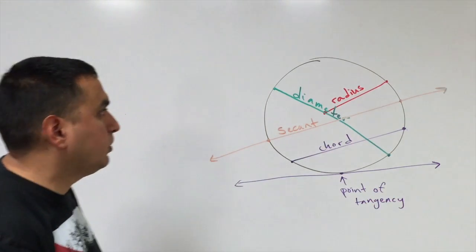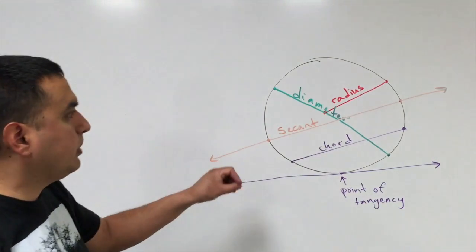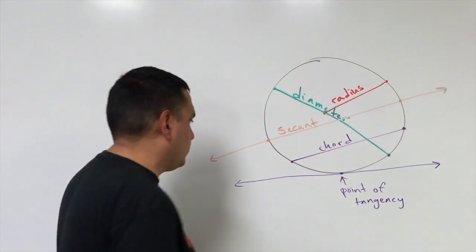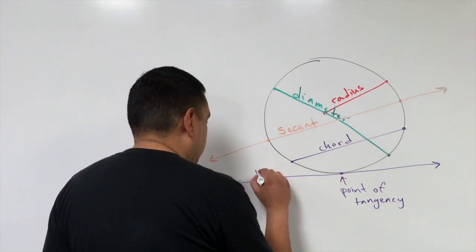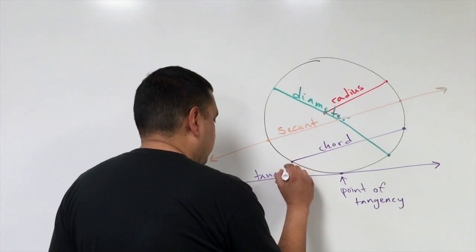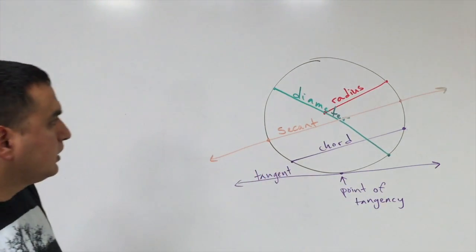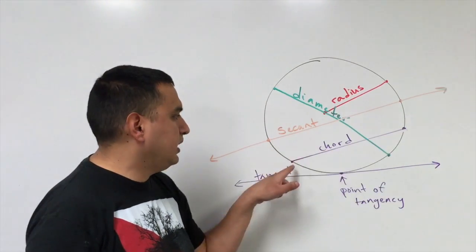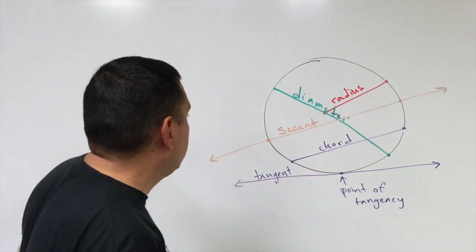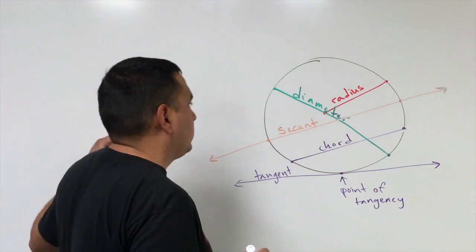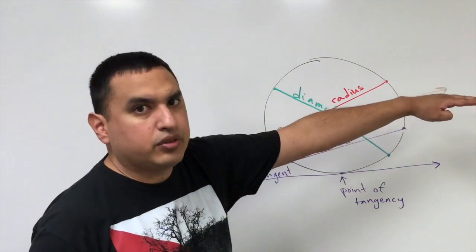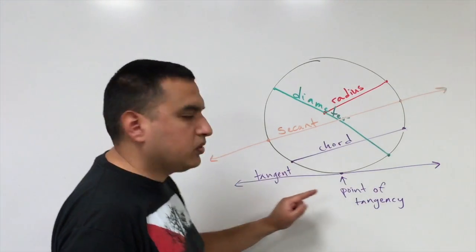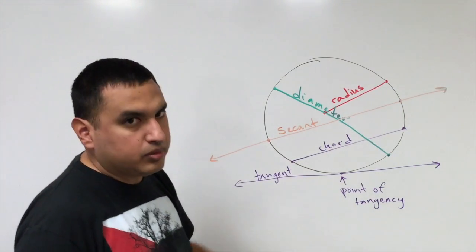So we have the radius and the diameter, which you should remember. A chord, secant, and tangent line are typically the new ones. A chord goes from one side of the circle to the other — it starts and stops on the edge. A secant cuts all the way through on both sides. And the tangent line only touches the circle at one point, called the point of tangency.